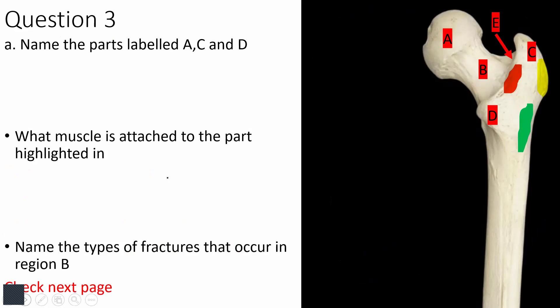Question three shows the proximal femur. I expect you to know this is a femur and to know how to side a femur — whether it's from the right or left side of the body, with reasons. Structure A is the head of the femur, C is the greater trochanter, and D is the lesser trochanter.